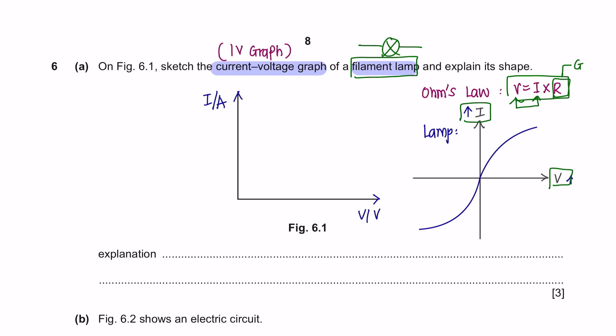So on figure 6.1, you can draw like this. This is because the current causes the filament lamp to heat up. As the filament lamp gets hot, its resistance increases. This opposes the current, causing it to increase at a slower rate.